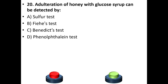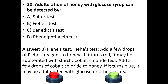Twentieth question — last question of this session: Adulteration of honey with glucose syrup can be detected by — A. Sulfur test. B. Fiehe's test. C. Benedict's test. D. Phenolphthalein test. Your answer is Fiehe's test. Add a few drops of Fiehe's reagent to honey; if it turns red, it may be adulterated with starch. For the cobalt chloride test, add a few drops of cobalt chloride to honey; if it turns blue, it may be adulterated with glucose or other sugars.